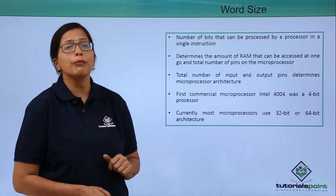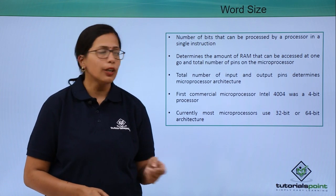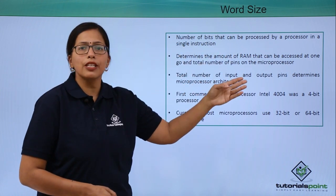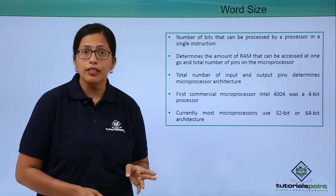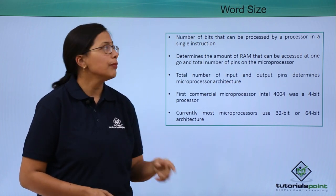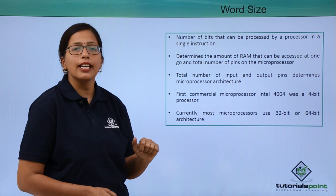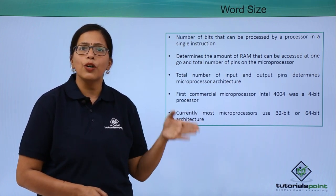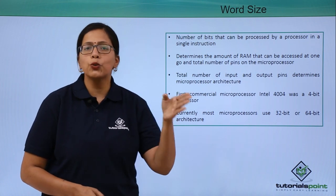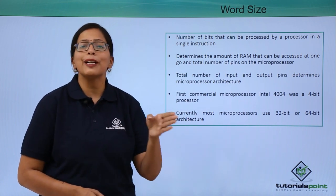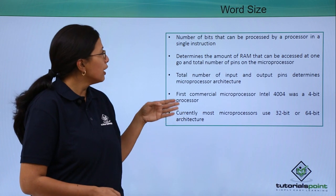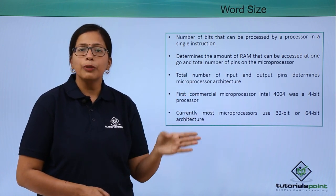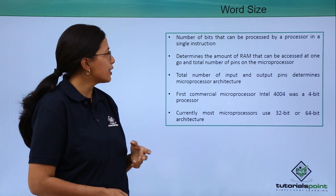Now let's see what we mean by the word size of the microprocessor. The number of bits that can be processed by the microprocessor at a time is the word size. One single instruction can take 2 bits, 3 bits, or 4 bits — that is the word size. However, it is always in multiples of 4, so it is typically 4-bit, 16-bit, 32-bit, or 64-bit word size.